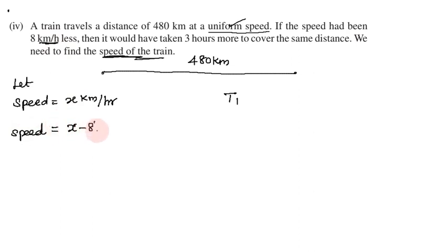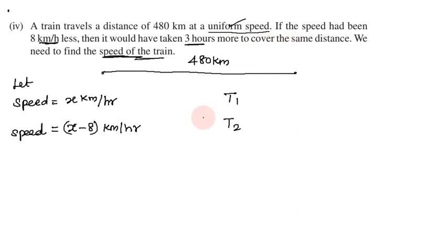The train will cover the same distance of 480 km at the reduced speed. Since speed and time are inversely proportional, a lower speed means more time is taken to cover the same distance.